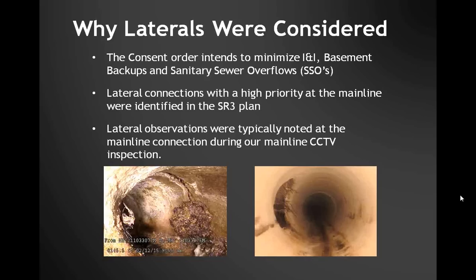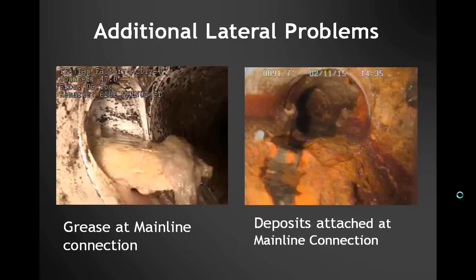Looking at CCTV pictures, you can see how many assumptions could be made about the remaining condition of a lateral. On the left, you can see roots at the first joint in the lateral, and on the right, a similar situation viewed from the main line. Other examples show grease at the main line connection and typical deposits, but once again you really can't tell what's going on just out of sight.